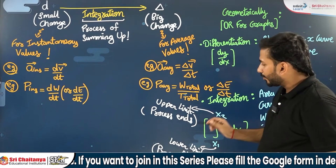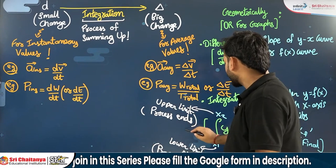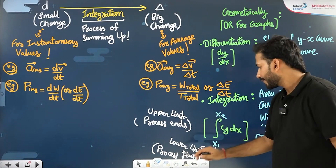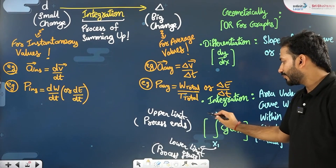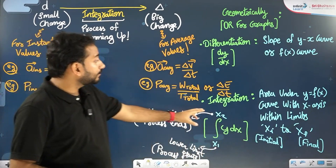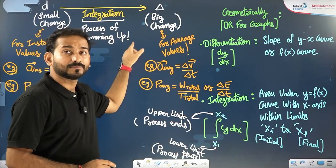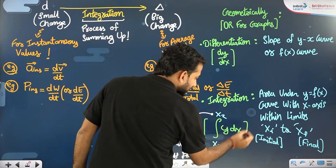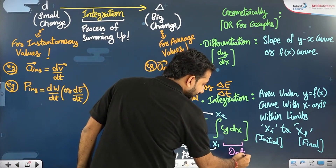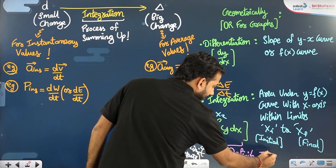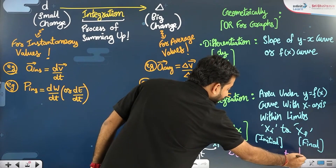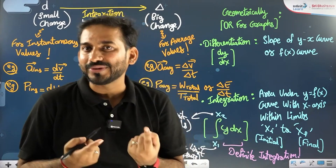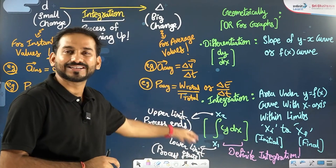They also have geometrical significance — geometrically they mean something. What they mean geometrically is what we are trying to learn here. Integration means the process of summing up changes. If we know where to start and where to end the process, we call it definite integration. In physics, it is more important to learn when to integrate and why to integrate. How to integrate is going to be easy — we will see that today itself.